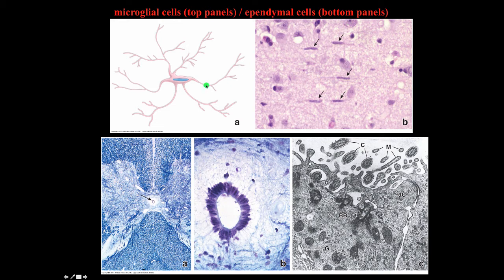The top panel shows a cartoon of microglial cells and then the histological view of microglial cells. Microglial cells are not that easy to pick up histologically, but they kind of look like a fusiform cell, almost like a fibrocyte. If you see long spindle-shaped cells in the central nervous system, there's a good chance they're microglial cells. There's also a multipolar neuron with a cell body and nucleus shown here.